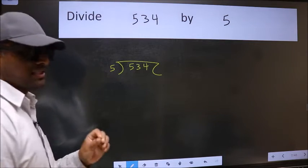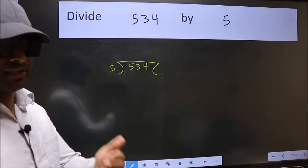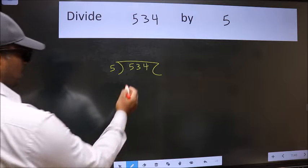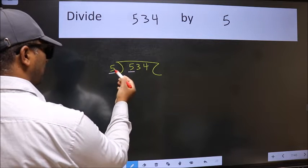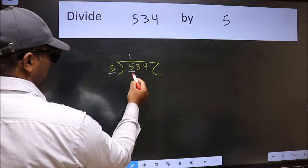This is your step 1. Next, here we have 5 and here also 5. When do we get 5 in 5 table? 5 once 5.